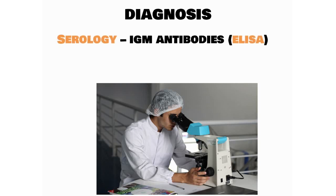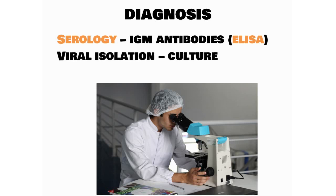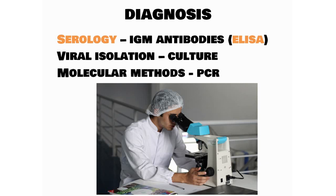Diagnosis can be done by serology, where we detect antibodies — IgM antibodies are detected by ELISA, and this is one of the commonly preferred methods as it is non-invasive and an easy technique. Viral isolation can be done by various culture techniques but is not commonly preferred as it is time-consuming. Molecular methods are very sensitive and specific, done by polymerase chain reaction — reverse transcriptase PCR or real-time PCR — but it is costly and less commonly done compared to ELISA in the current scenario in developing countries.